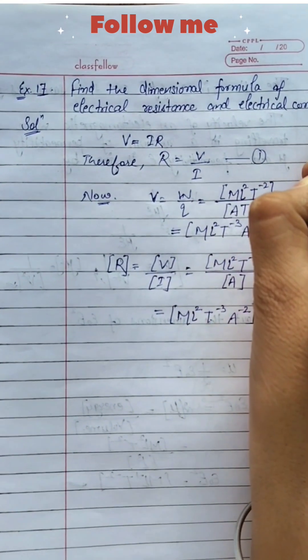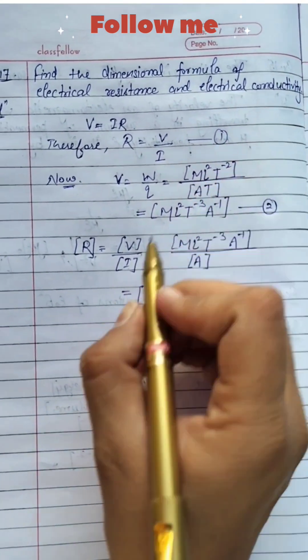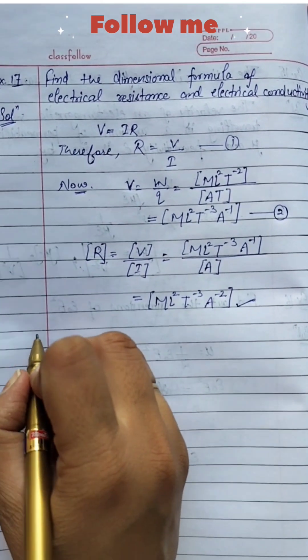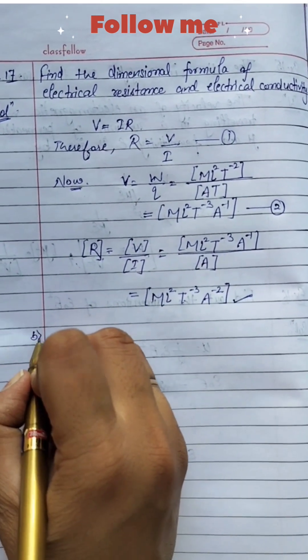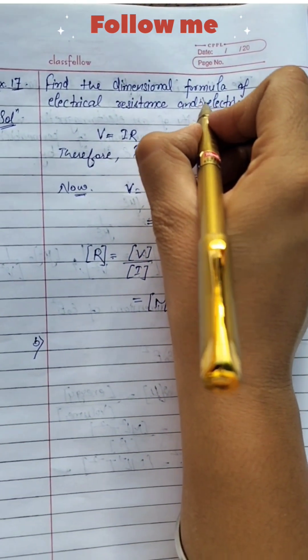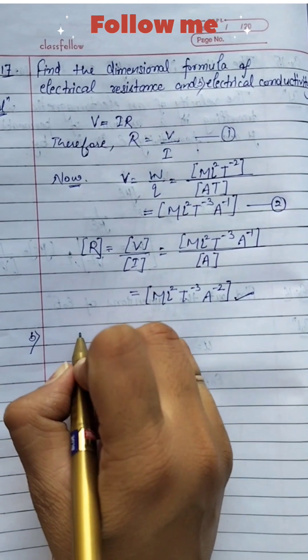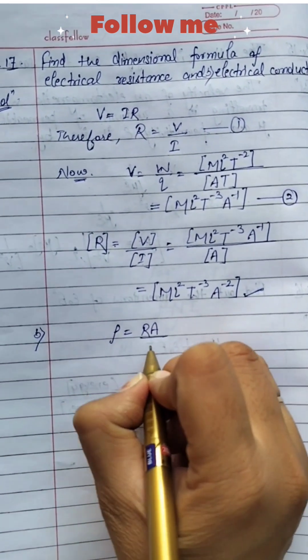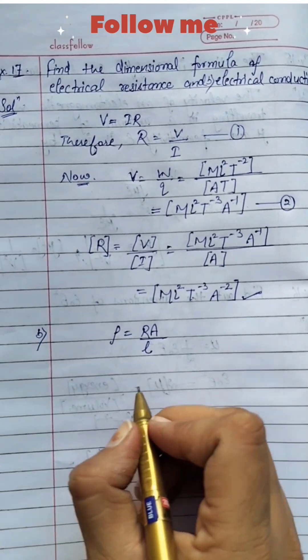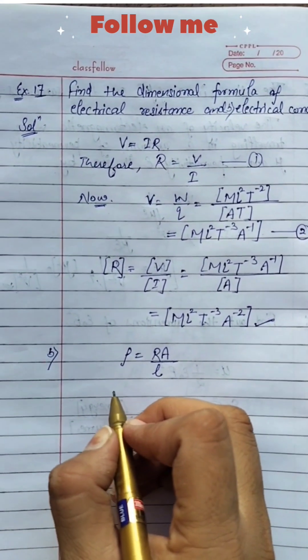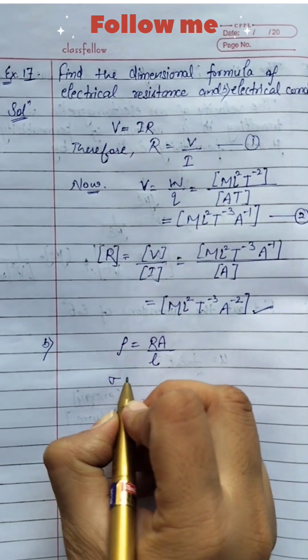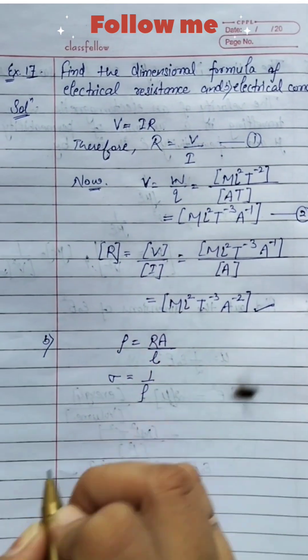And the second one is electrical conductivity. If we talk about electrical conductivity, then the electrical resistivity we can write as ρ, and electrical resistivity ρ equals RA upon L. And we also know that electrical conductivity is defined as σ equals 1 upon ρ.